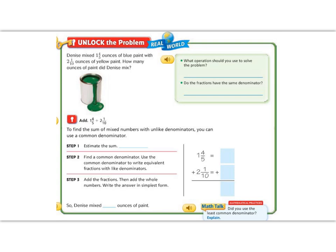Alright 5th graders, let's begin by reading the Unlock the Problem. It says, Denise mixed 1 and 4/5 ounces of blue paint with 2 and 1/10 ounces of yellow paint. How many ounces of paint did Denise mix?